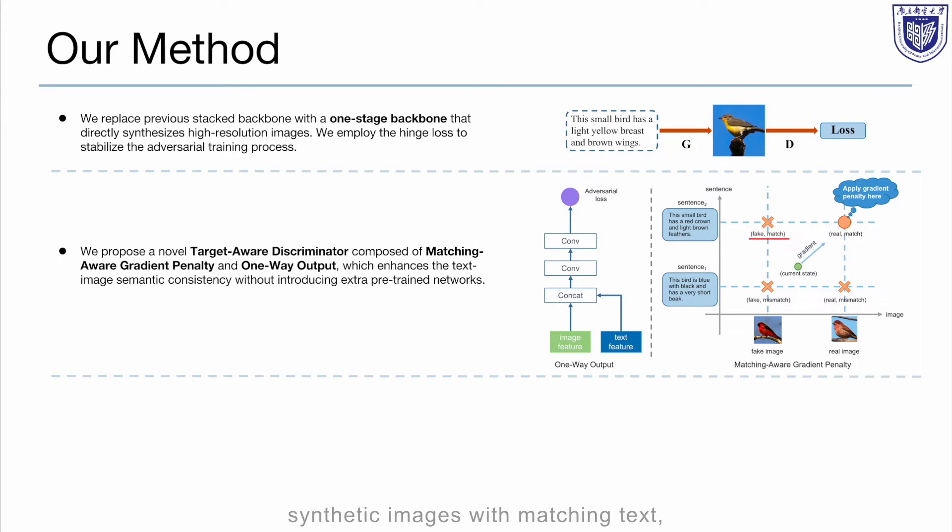Synthetic images with matching text, synthetic images with mismatched text, real images with matching text, and real images with mismatched text. Our target is synthesizing realistic and text-matching images, so we apply gradient penalty on real images with matching text to smooth the gradient surface around the target data and help our network converge to the target more easily.